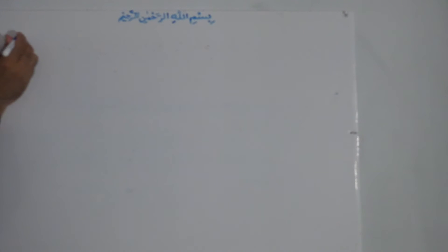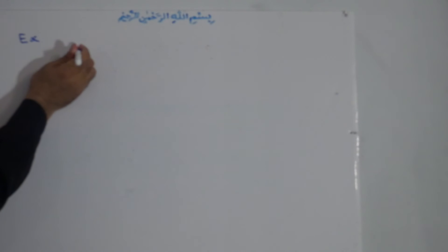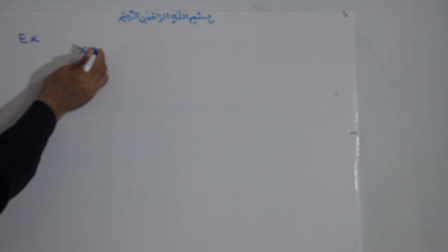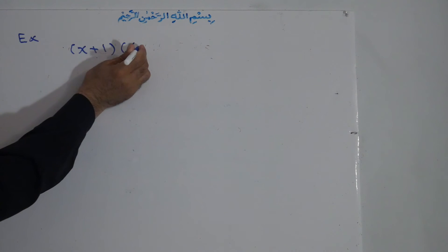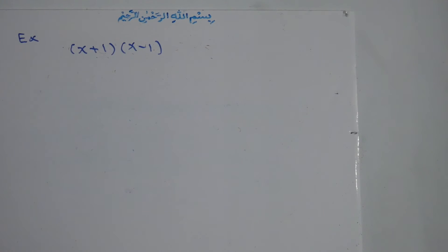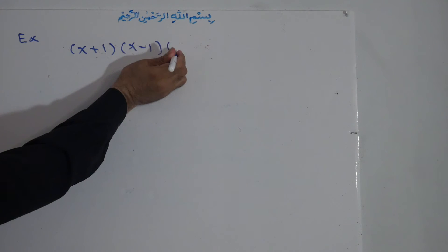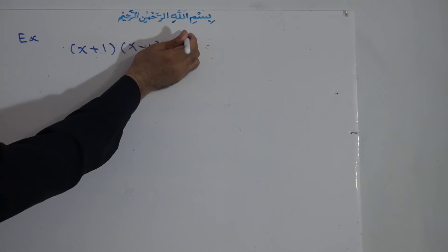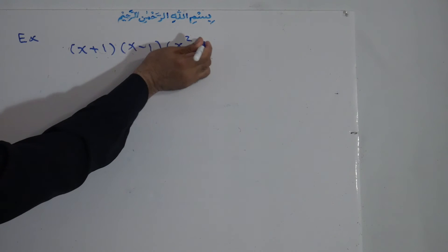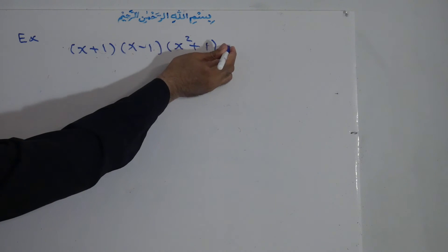Now we're showing this in an example. If there are three polynomials — (x plus one) times (x minus one), this is a binomial and at the same time a polynomial. Any expression with more than one term is a polynomial. x squared plus one is also a polynomial.